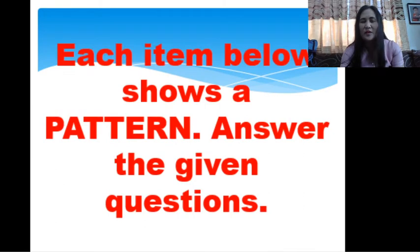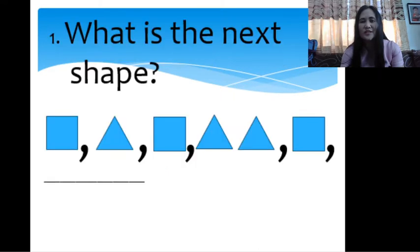So let's do it. Remember, every correct answer is considered 40 points. Each item below shows a pattern. Answer the given questions. Number one: What is the next shape? Just write your answer in your paper, then later on we will be checking on that.